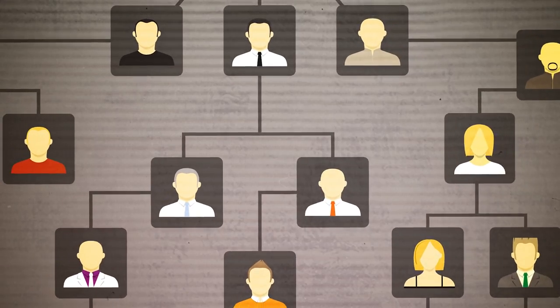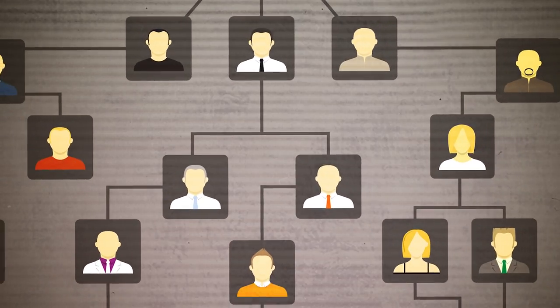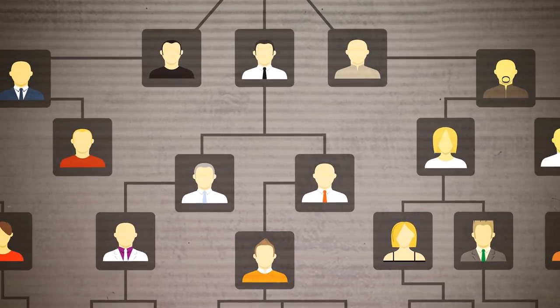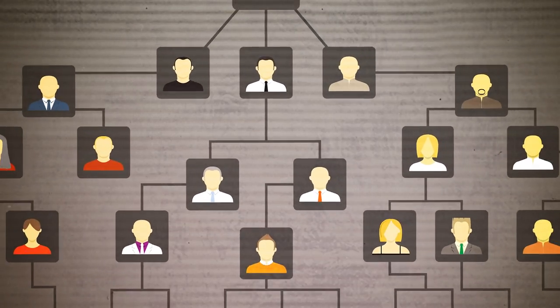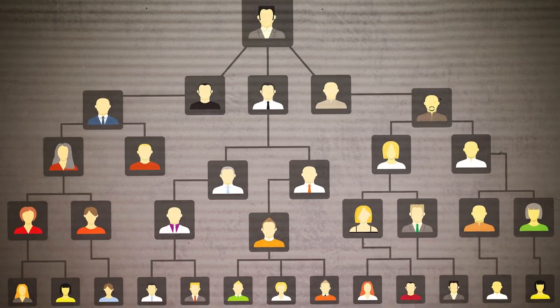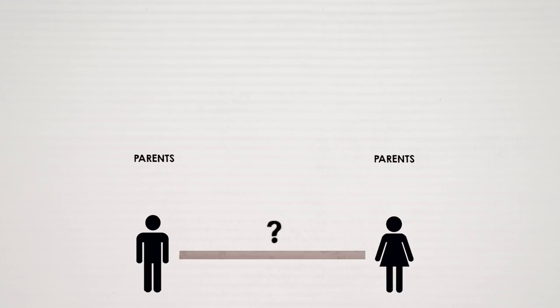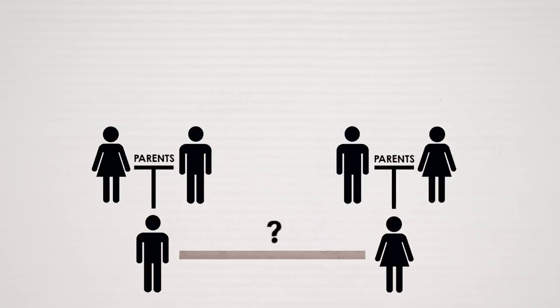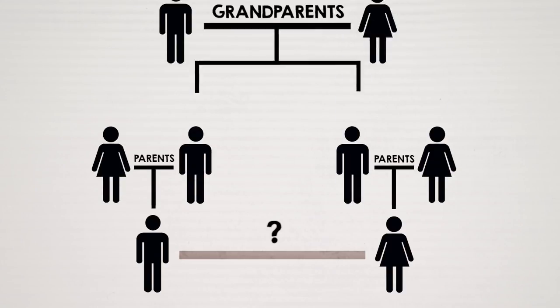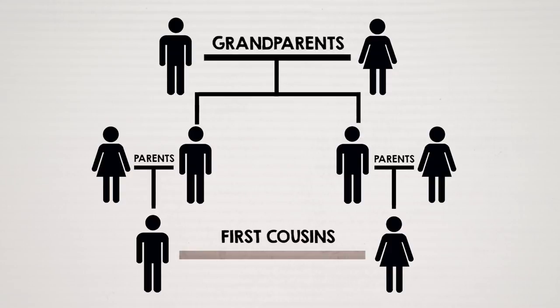Degrees of cousinhood — first cousins, second cousins — all describe the number of generations that separate you and your cousin from your closest common ancestor. Let's start with your first cousin. You're from different parents, but the two of you share a grandparent. You're both one generation away from a shared ancestor, and therefore are first cousins.